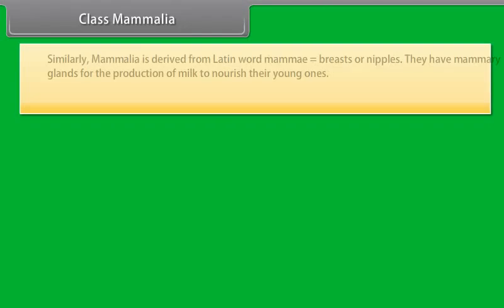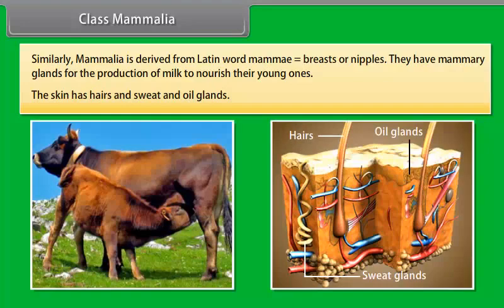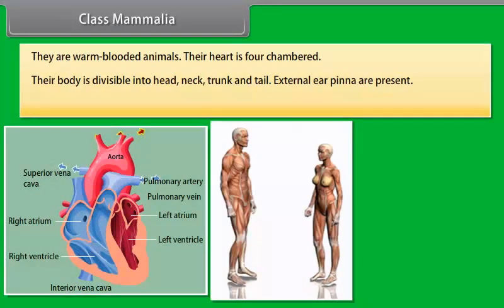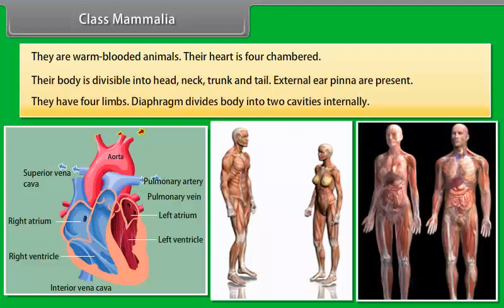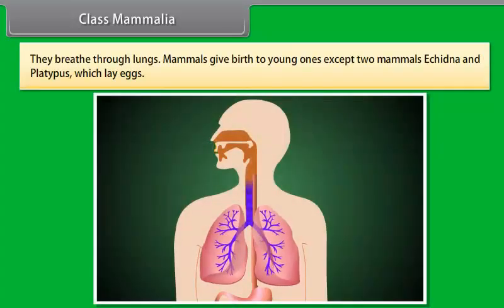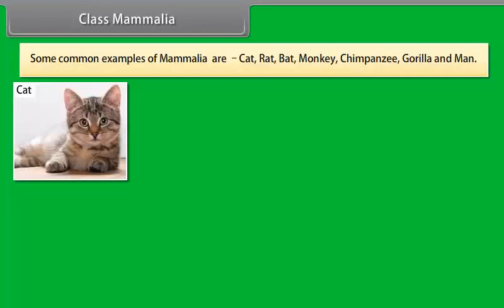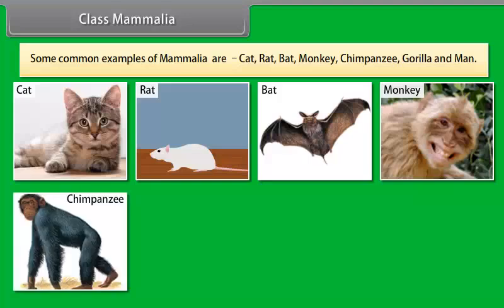Class Mammalia. Mammalia is derived from Latin word 'mamma' meaning breasts or nipples. They have mammary glands for the production of milk to nourish their young ones. Their skin has hairs and sweat and oil glands. They are warm-blooded animals with a four-chambered heart. Their body is divisible into head, neck, trunk, and tail. External ears (pinna) are present. They have four limbs. The diaphragm divides the body into two cavities internally. They breathe through lungs. Mammals give birth to young ones, except two mammals — Echidna and Platypus — which lay eggs. Common examples are cat, rat, bat, monkey, chimpanzee, gorilla, and man.